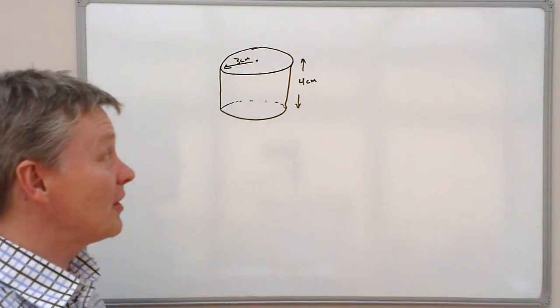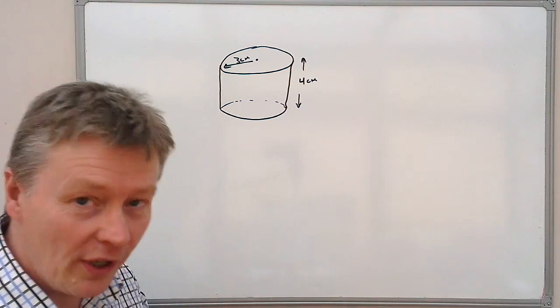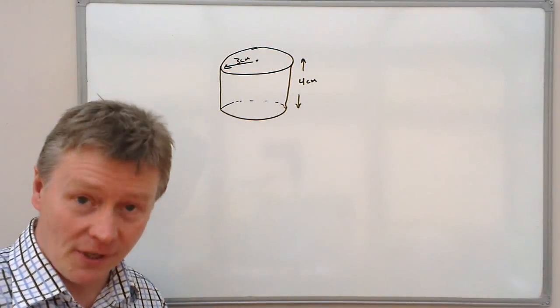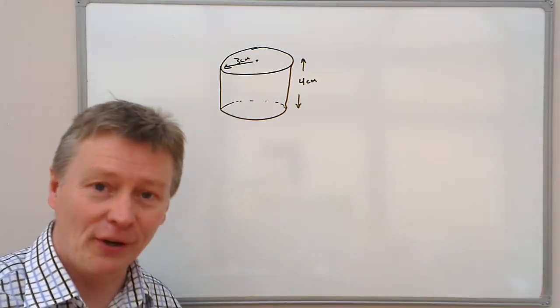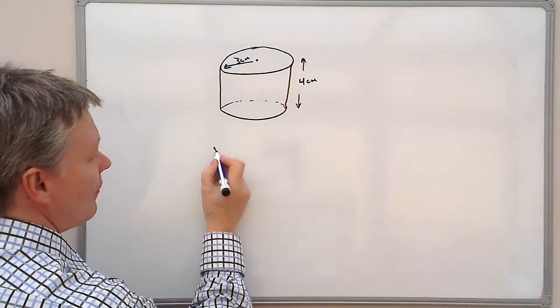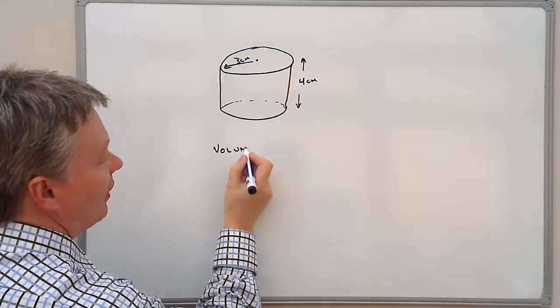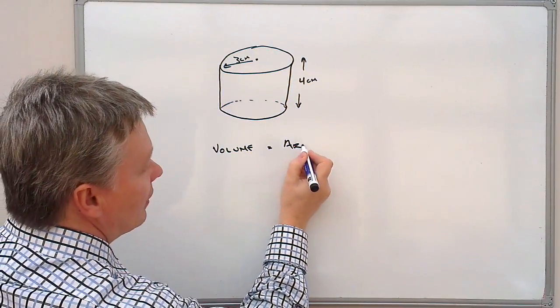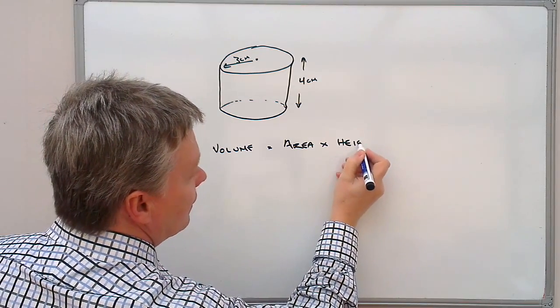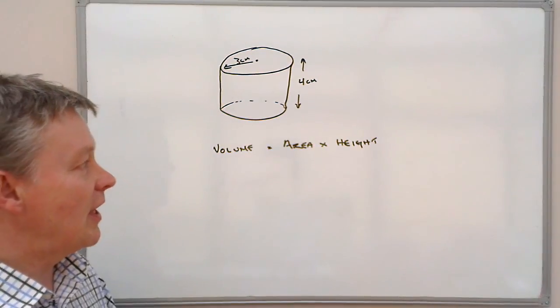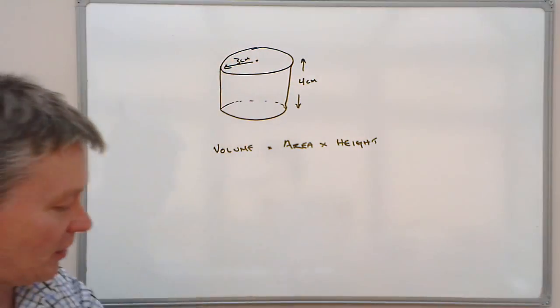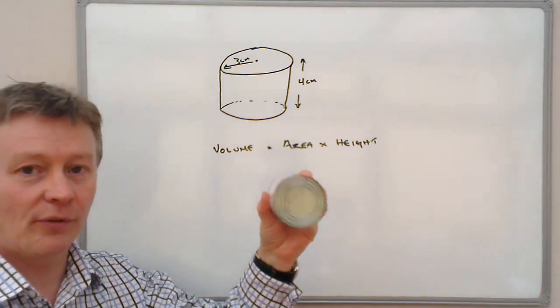So what we're going to do is work out the volume. Now when we're working out the volume of anything, whether it's a cylinder or a prism, which is a three-dimensional object, what we do is we multiply the area times the height. So what we're going to do is firstly look at the area of the bit at the top, the circle at the top.